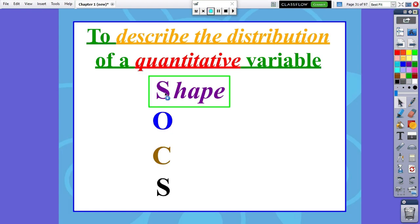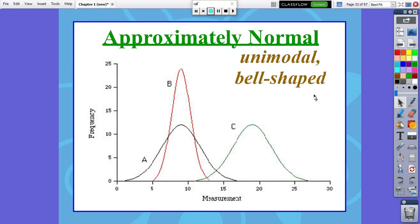The first S of SOCS is shape. Anytime you're asked to describe the distribution of a quantitative variable, first thing you do is typically talk about the shape of the data set. We need to see what the data set looks like visually.